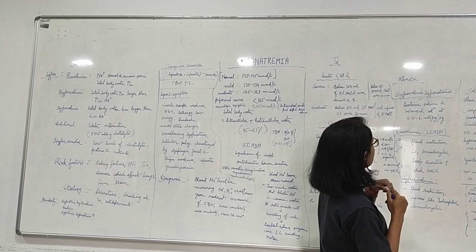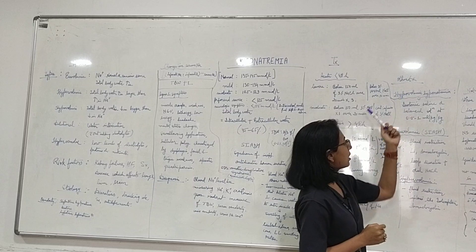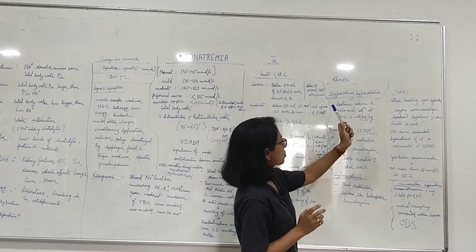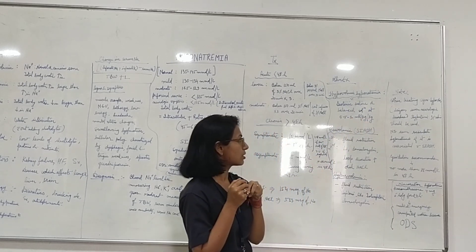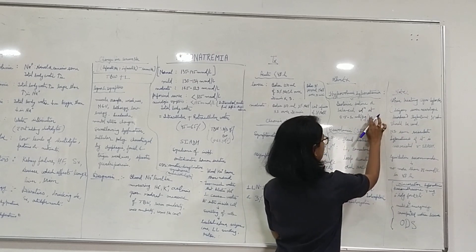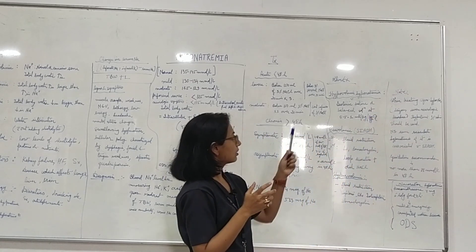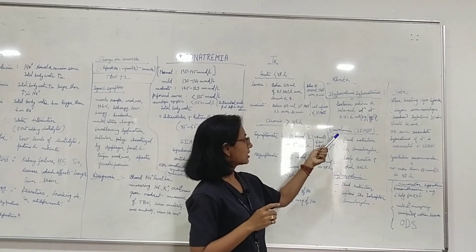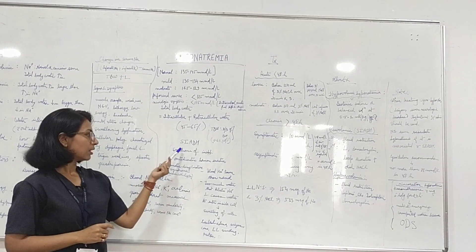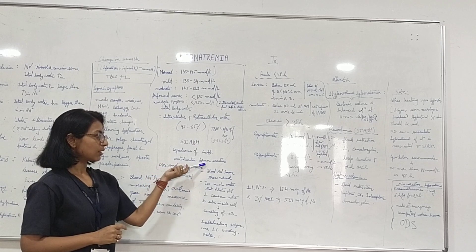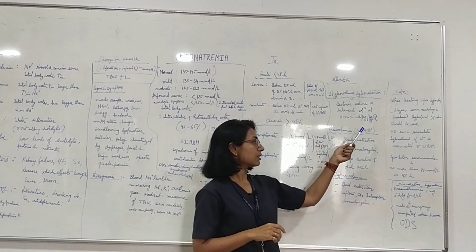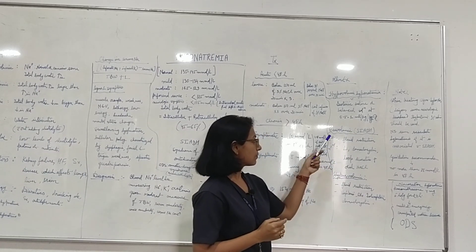For hypovolemic hyponatremia, isotonic saline or a balanced solution can be given at a rate of 0.5 to 1 ml per kg per hour. If it is euvolemic hyponatremia associated with SIADH — Syndrome of Inappropriate Anti-Diuretic Hormone secretion — there are first-line and second-line therapies. If there is any abnormality with the anti-diuretic hormone (ADH), the patient can develop euvolemic hyponatremia.